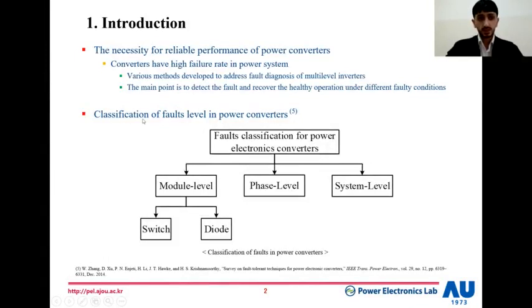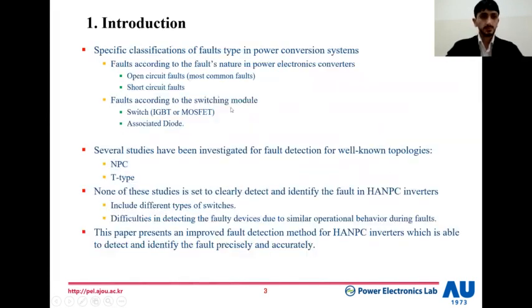The main classifications of faults in power converters are shown in this diagram, divided into module level, which is divided into switching and the associated diode, phase level, and whole system level. The main kinds of faults are divided into two main categories: open circuit faults, which are the most common faults and will be studied in this work, and short circuit faults. These faults can happen in the switching module level, as shown in the switches, which can be IGBT or MOSFET, or the associated diode.